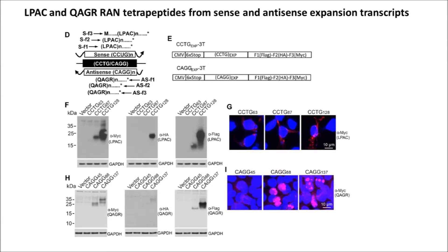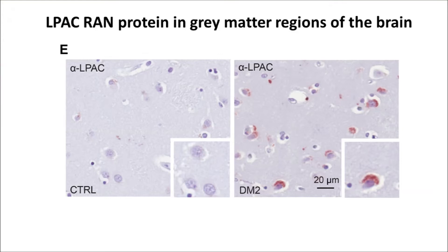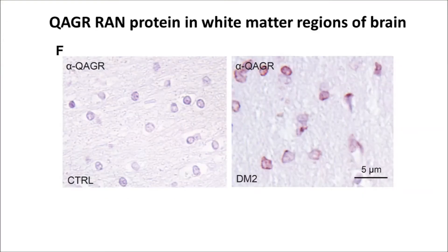We showed that these proteins can be expressed using mini genes without an AUG initiation codon. The next thing we did was figure out if they were actually expressed in autopsy tissue or in human brains. We found evidence that they're there as protein aggregates. One really surprising finding was a completely different pattern of accumulation: the LPAC proteins were found primarily in the gray matter, whereas the QAGR proteins were found in the white matter regions of the brain.